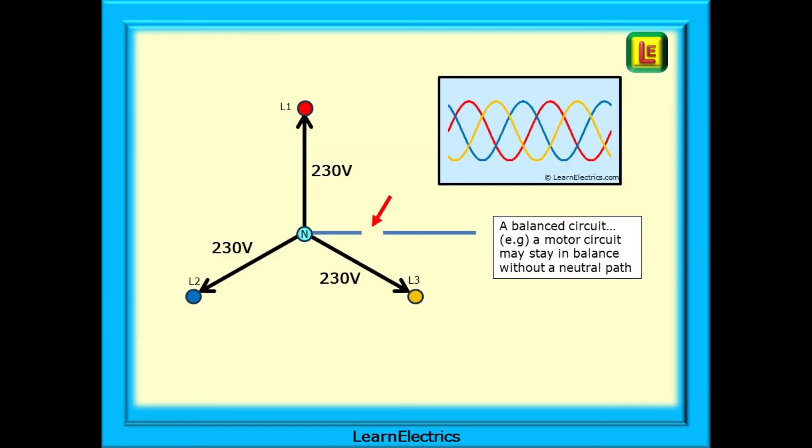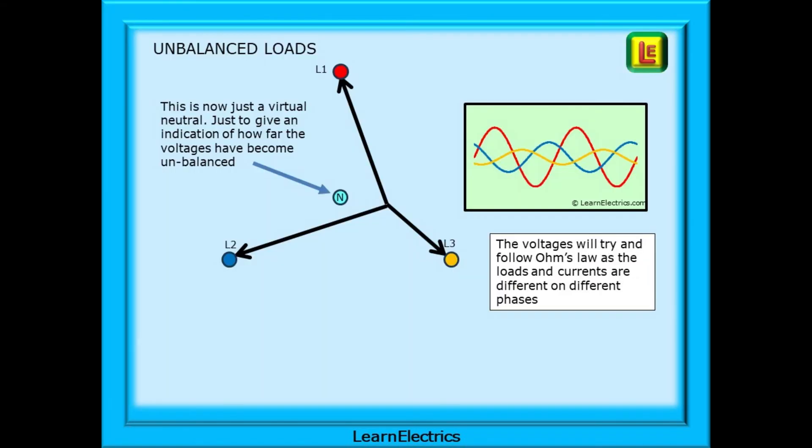Why has this happened? Why are the voltages suddenly at 400 volts? In a perfectly balanced circuit, they will stay at 230 volts. They didn't need the neutral before, they don't need neutral now. A balanced motor circuit will stay in balance without a neutral path.